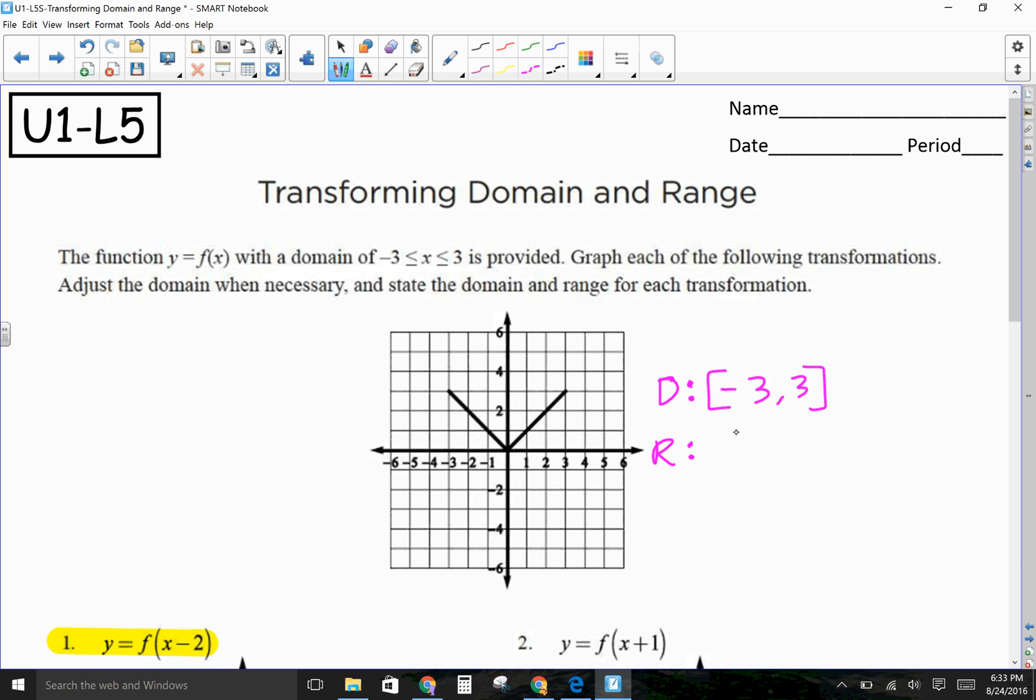So, then my range, I'm looking for the lowest point on my graph, which is right here. And that is 0. And the highest point on my graph, either one of these, is at 3. So, that is my domain and range.